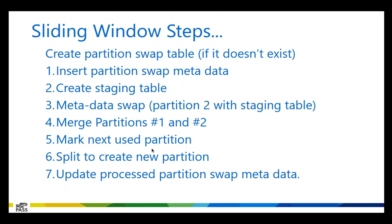Here are the basic steps for the sliding window process. I build a metadata table that keeps a record of everything done through the sliding window. I insert data into that table before making any changes. Then we create our staging table, which is identical to the production table. The reason the sliding window creates the staging table dynamically is that in environments where things get implemented outside of change control, someone might add an index on the production table but not the staging table, which would cause the metadata swap to fail — so I use a tool to generate it automatically.